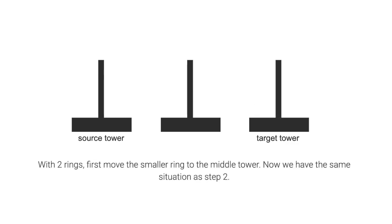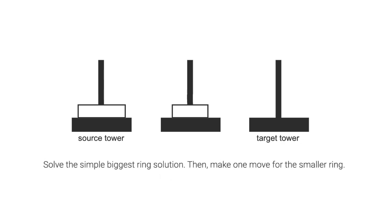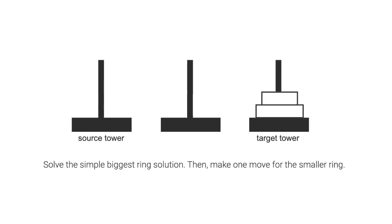With two rings, first move the smaller ring to the middle tower. Now we have the same situation as Step 2. Solve the simple biggest ring solution. Then, one move for the smaller ring.